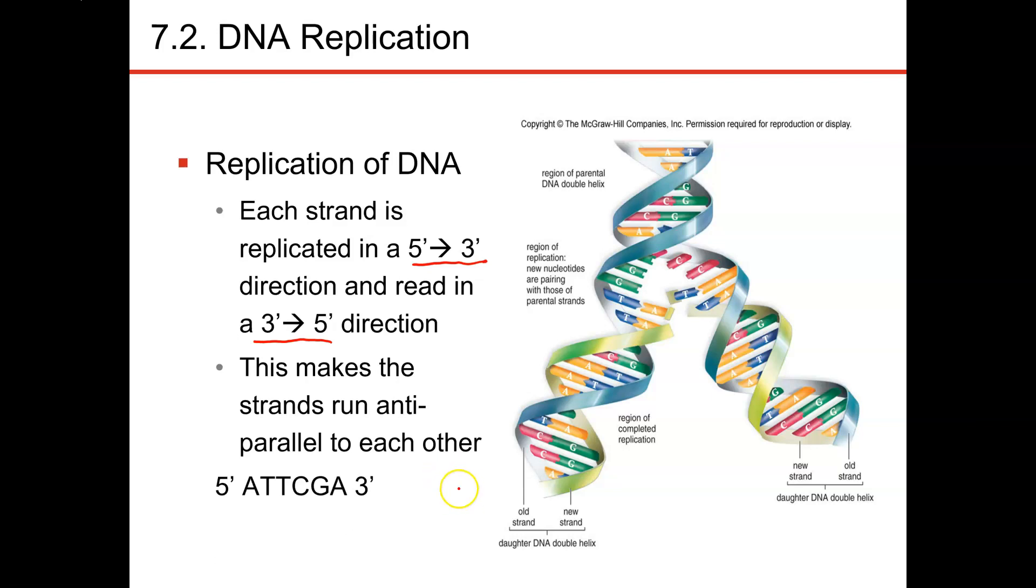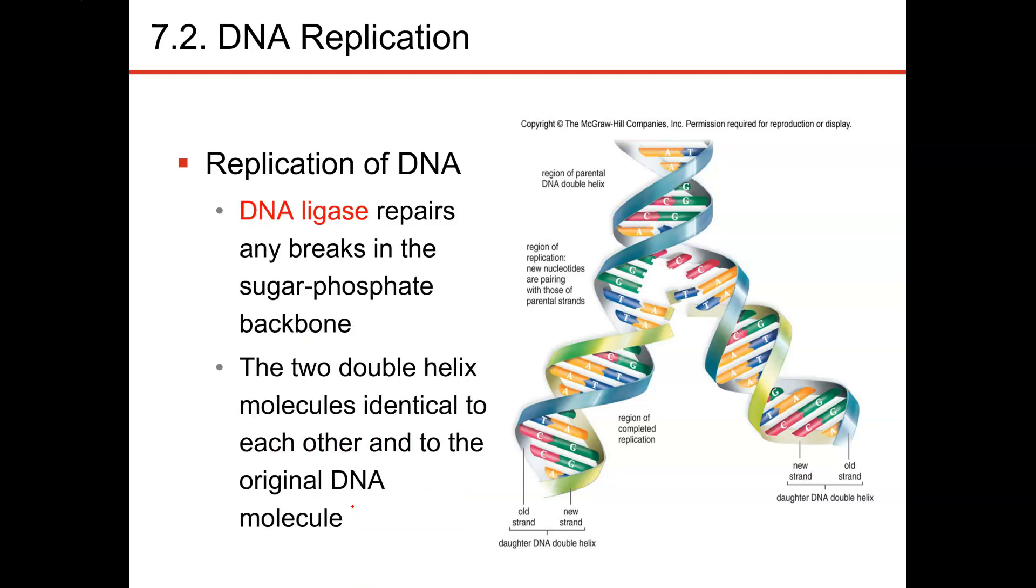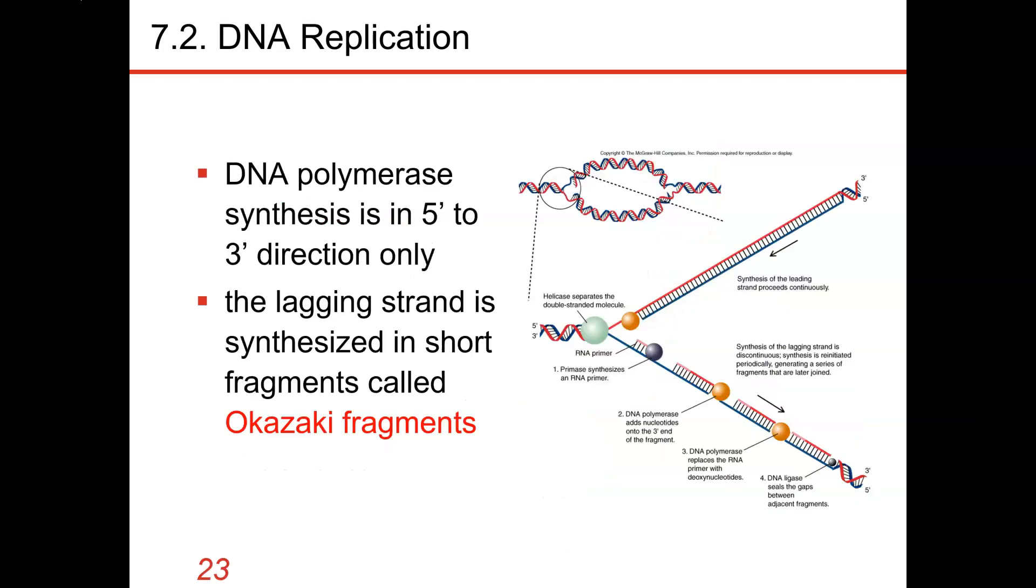If this is the parent strand here, then the daughter strand is going to be complementary, and the 5-prime direction starts on the opposite side of the parent strand. We have DNA ligase that repairs any breaks in the backbone, the deoxyribose and phosphate backbone, so that we end up having two complementary DNA molecules that are identical and not broken or damaged in any way.